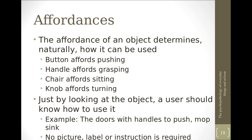The first is affordances. The affordance of an object determines naturally how it can be used — what operations are possible with it. For example, a button affords pushing. A button, if it is there, allows us to push it. A handle affords grasping. A chair affords sitting on it. A knob affords turning it. So these are the various affordances of that particular object.